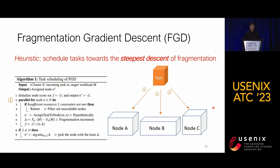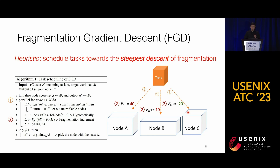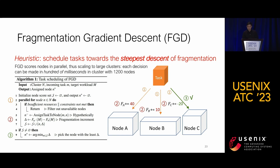For example, placing the task on node A increases fragmentation by 40, on node B by 10, but on node C it decreases fragmentation by 20 — so we choose node C. Note that hypothetical assignments can be performed in parallel for acceleration. In our experiments, each decision can be made within hundreds of milliseconds in a cluster with over 1,000 nodes.